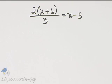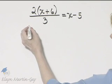How do we begin solving this equation? It has fractions. The LCD is 3. Let's begin by multiplying both sides by 3.